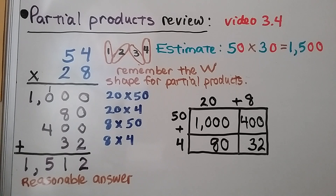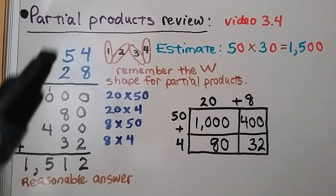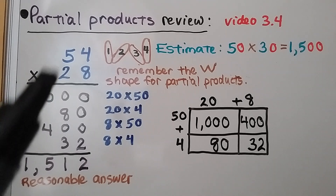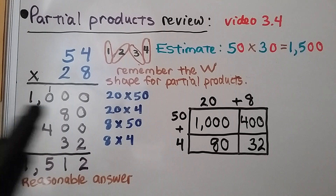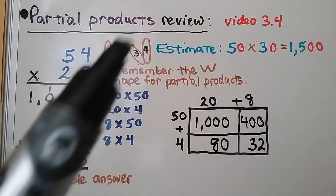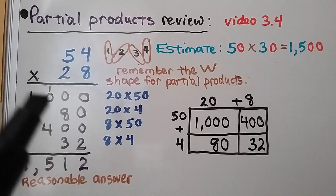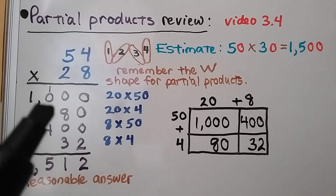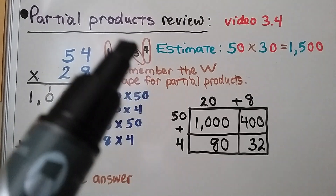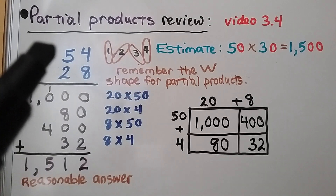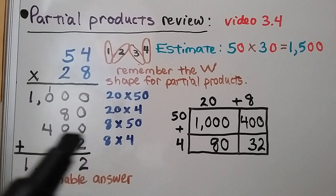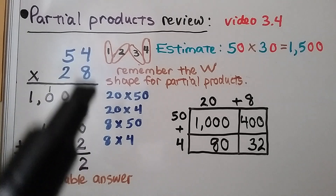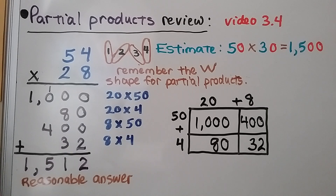When multiplying using partial products, we think of that W shape. We start with the tens place and do 20 times 50, which is 1,000. Then we slant off to the right and do 20 times 4, which is 80. Then, going slanted to the left, we do 8 times 50, which is 400. Then the last step — the ones — 8 times 4, which is 32. We add our partial products and get 1,512. Our estimate was 1,500, so that's a very reasonable answer.